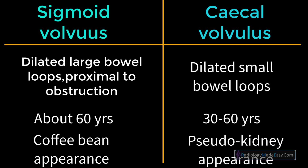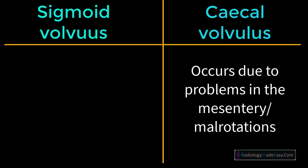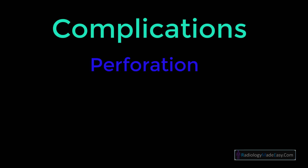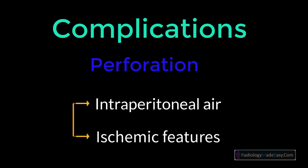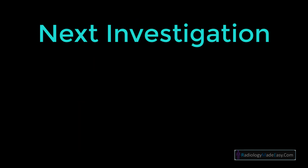In cecal volvulus you get a pseudo-kidney appearance. Cecal volvulus usually occurs due to problems in the mesentery or malrotations — the cecum rotates around the cecal mesentery. You have to look for complications like perforation; check the intraperitoneal area for any ischemic features or portal venous gas.